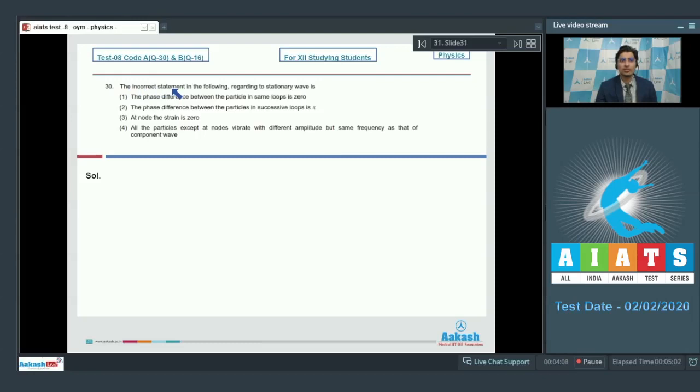Question number 30 says, the incorrect statement in the following regarding stationary wave is: first, the phase difference between the particle in the same loops is 0; second, the phase difference between the particles in successive loops is pi; third, at node the strain is 0; or fourth, all the particles except at nodes vibrate with different amplitude but same frequency as that of component wave.